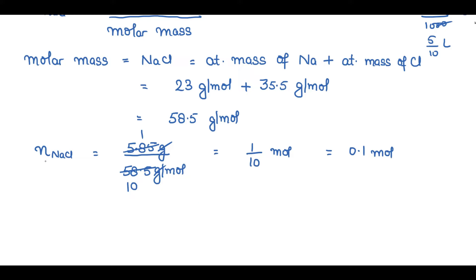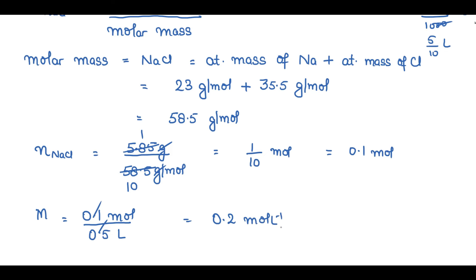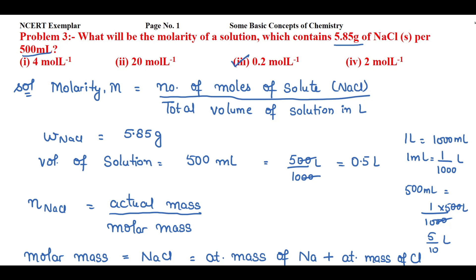Now let's find the molarity. Capital M equals number of moles of NaCl, which is 0.1 mole, divided by total volume of solution in liters, which is 0.5 liter. Cancelling, 1 divided by 5 gives 0.2 mole per liter inverse. Therefore the third option is the correct answer.